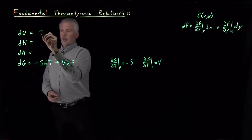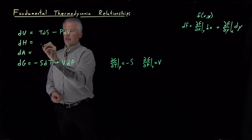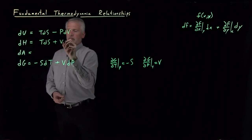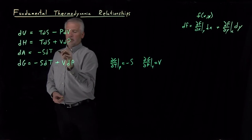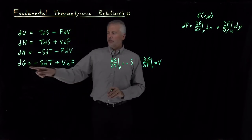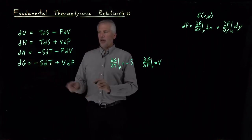dU is equal to TdS minus PdV, dH is equal to TdS plus VdP, dA is minus SdT minus PdV. Each of those fundamental equations allows us to write down some derivatives just like we've done for the Gibbs free energy.